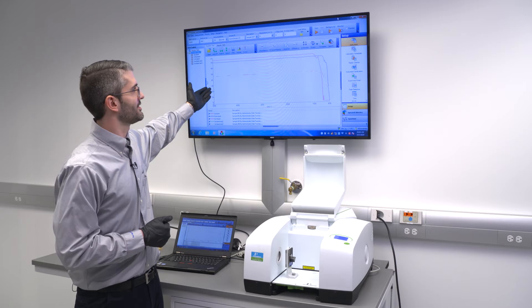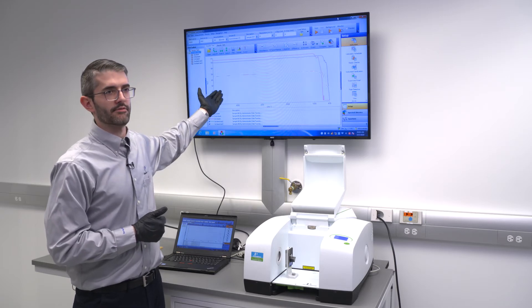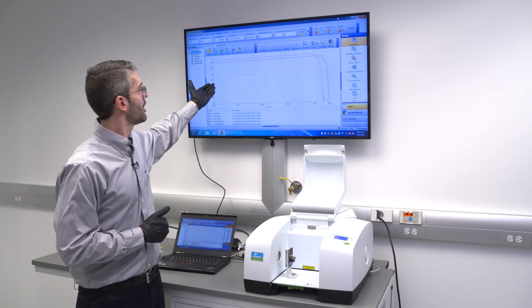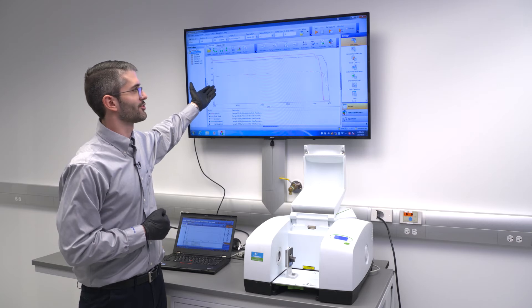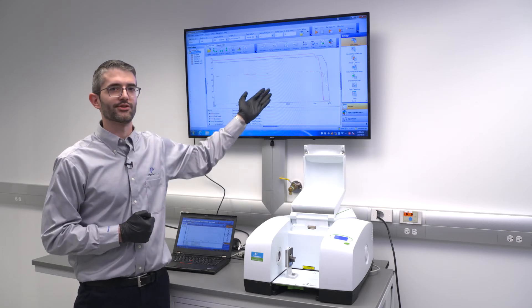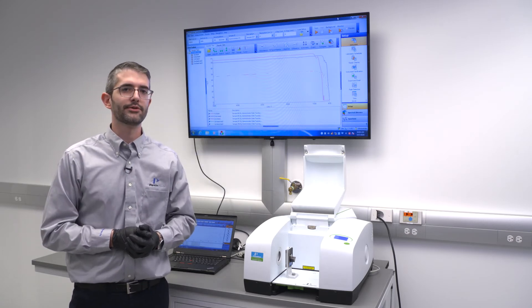However, Perkin-Elmer's AVC technology, or atmospheric vapor correction technology, automatically subtracts these spectral features out of the measured spectrum, requiring no user intervention to provide a high level of accuracy with minimal effort.